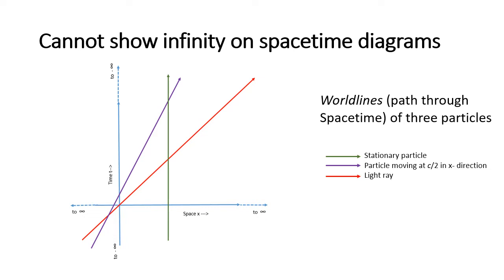The purple line is a particle moving at half the speed of light in the x direction. Assuming that the universe is flat and space and time go on to infinity, then these lines will go on forever. But of course we can't show this properly on the diagram. As I'll show next,